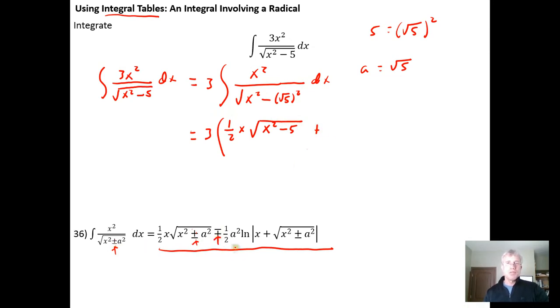So we do a plus, and it's plus a half of a squared, but a squared is just the square root of 5 squared, which is 5. So it's 1 half of a 5 times the natural log of the absolute value of x plus the square root of x squared minus, matching the minus, so we get the minus. A squared is the square root of 5 squared, which is just our 5. Close our radical, close the absolute value, close the parentheses, and then add our constant of integration.